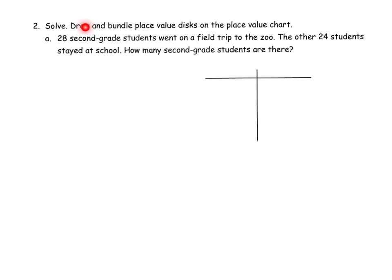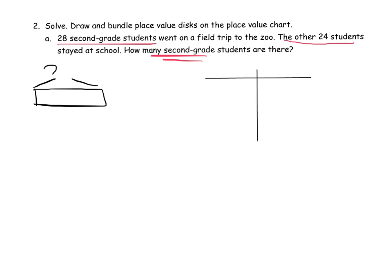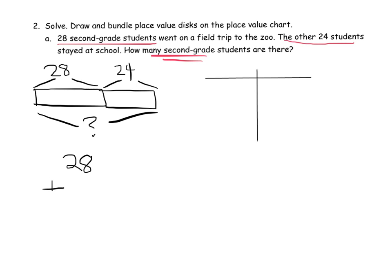Now a word problem: 28 second grade students went on a field trip to the zoo; the other 24 students stayed at school. How many second grade students are there altogether? Using a tape diagram, we have 28 students and 24 students, and we write the vertical addition problem as 28 plus 24, which we'll model on the place value chart.